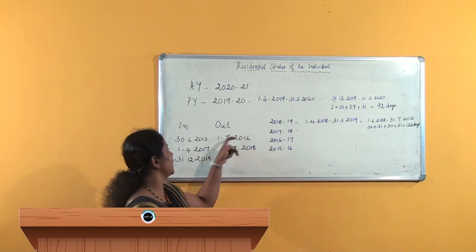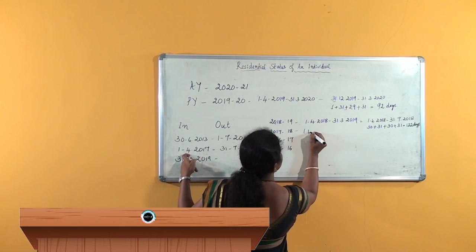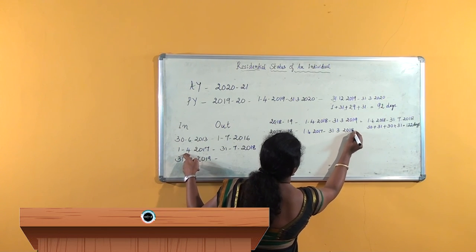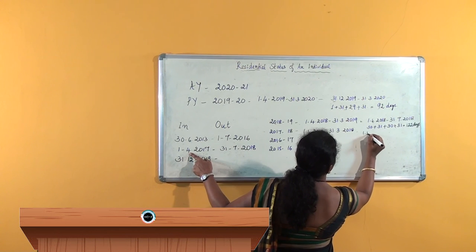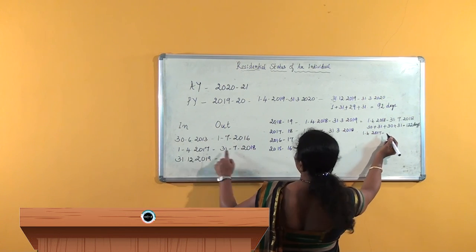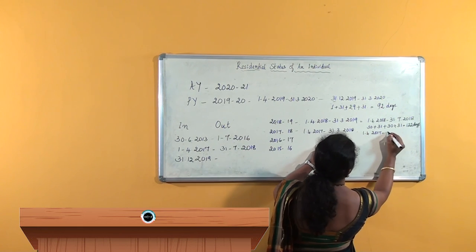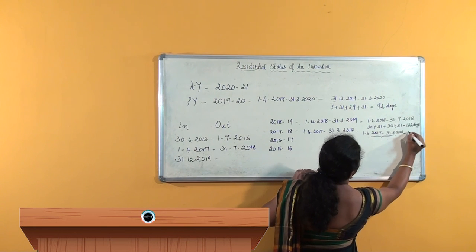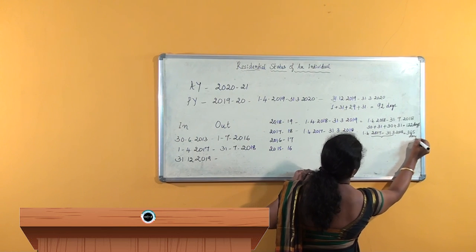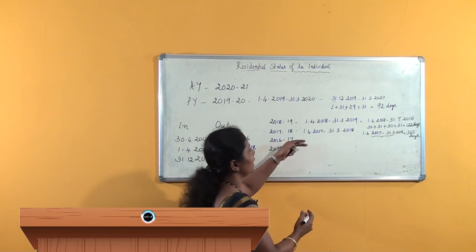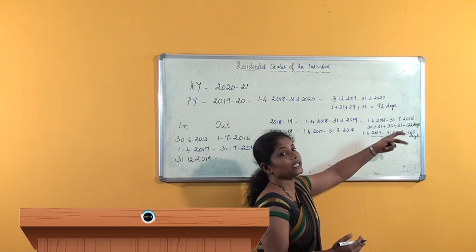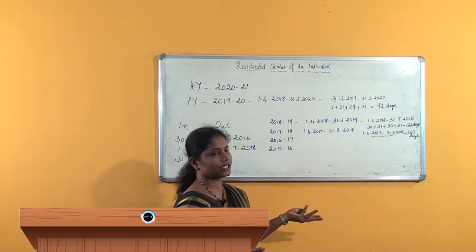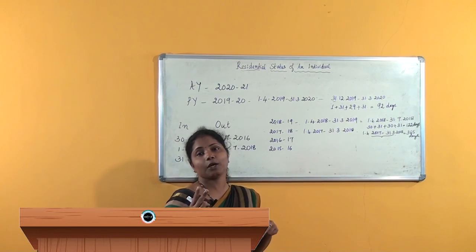In the year 2017-18, it starts from 1st April 2017 and ends on 31st March 2018. He comes to India on 1st April 2017 and leaves India on 31st July 2018. So in the year 2017-18, he was in India until 31st March 2018 — meaning he was in India for 365 days in this year. So we need not see further. He was in India for 365 days in the preceding 4 years — in just the preceding 2 years itself, he was in India for more than 365 days. So he fulfills the second basic condition.